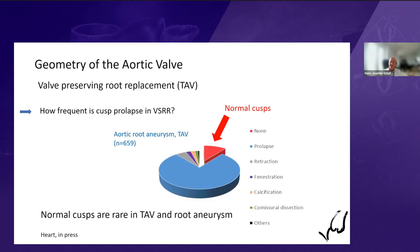How frequent is that? I reviewed over 650 root aneurysms, with results accepted in Heart, primarily to assess the frequency of cusp alterations. Cusp dimensions were determined after root replacement. In the vast majority — roughly 90% — we could preserve the valve. However, in 85% of instances, we found prolapse after reducing aortic dimensions. So having normal cusps at the end of a valve-preserving root replacement is actually an exception, not the rule.